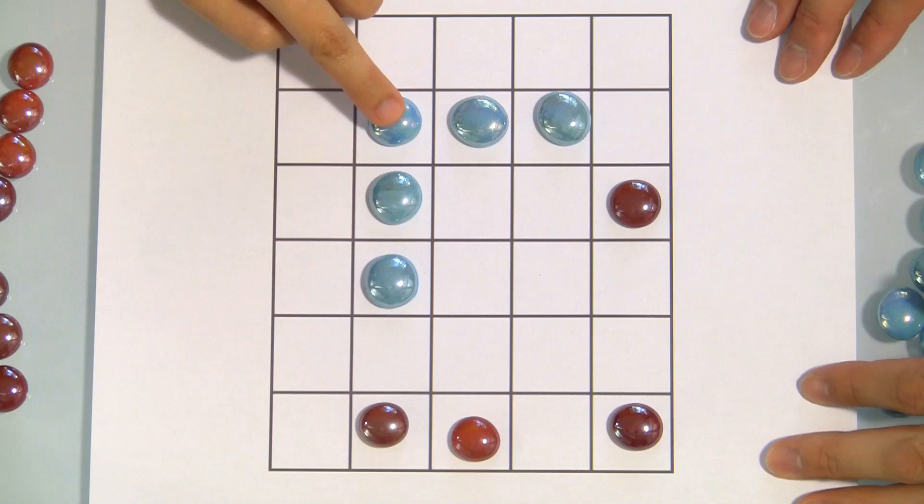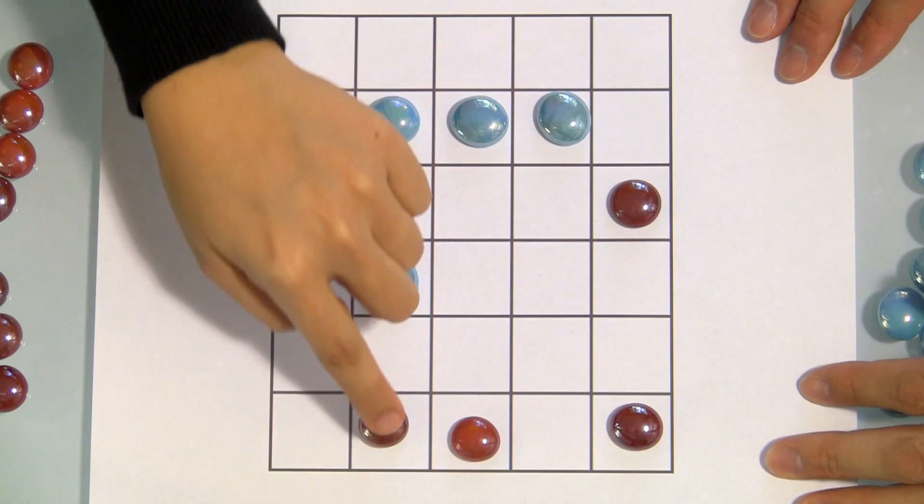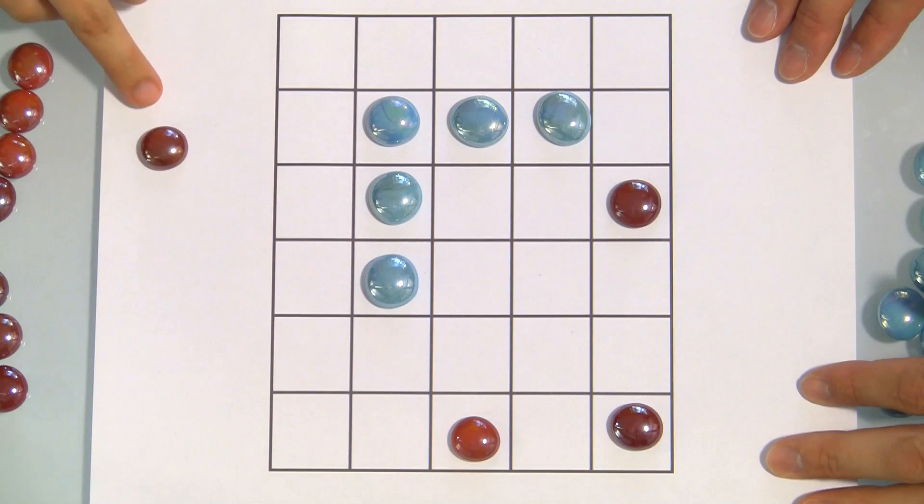Remember that even if you have multiple rows of three, you can only capture one of your opponent's pieces at a time.